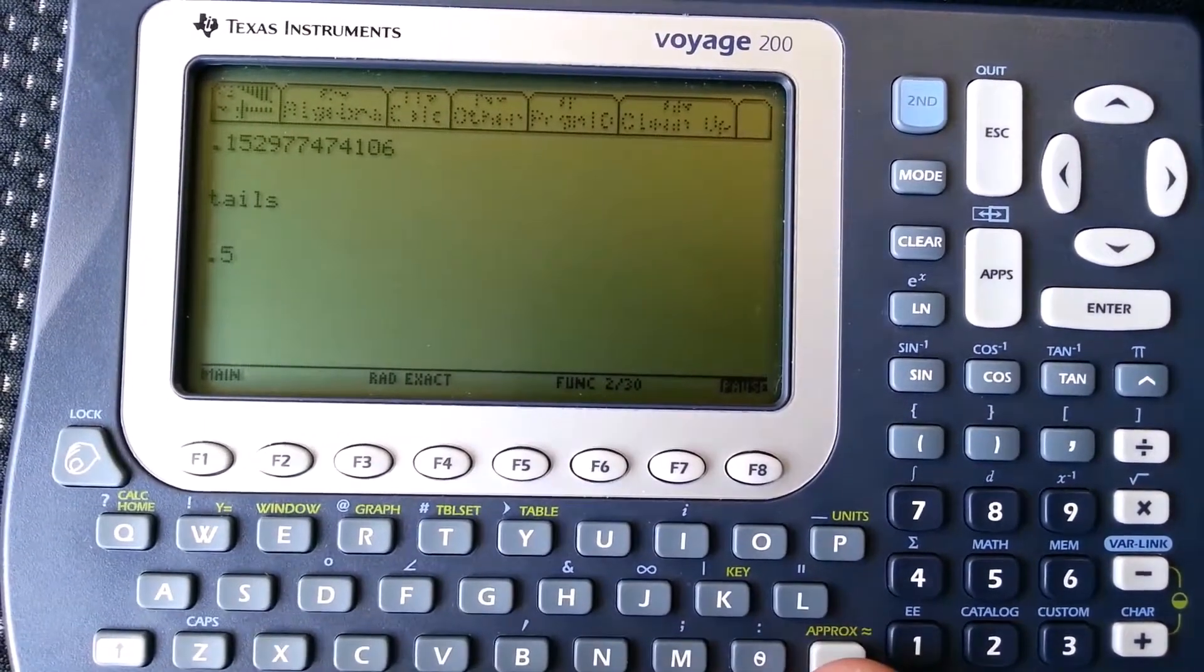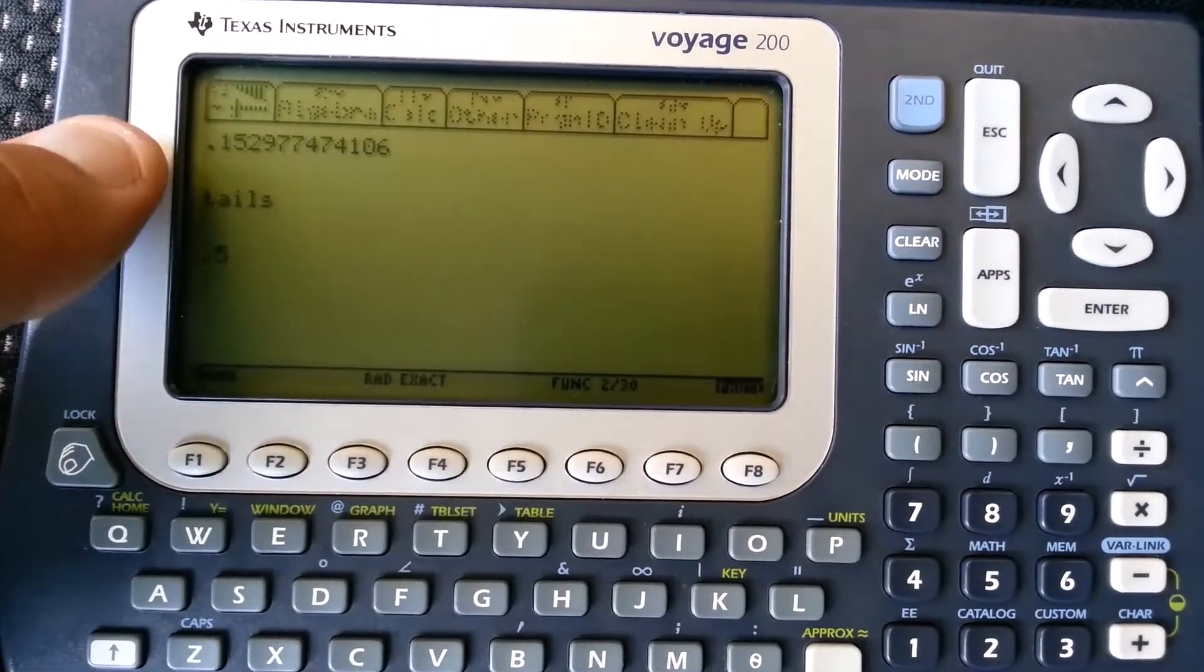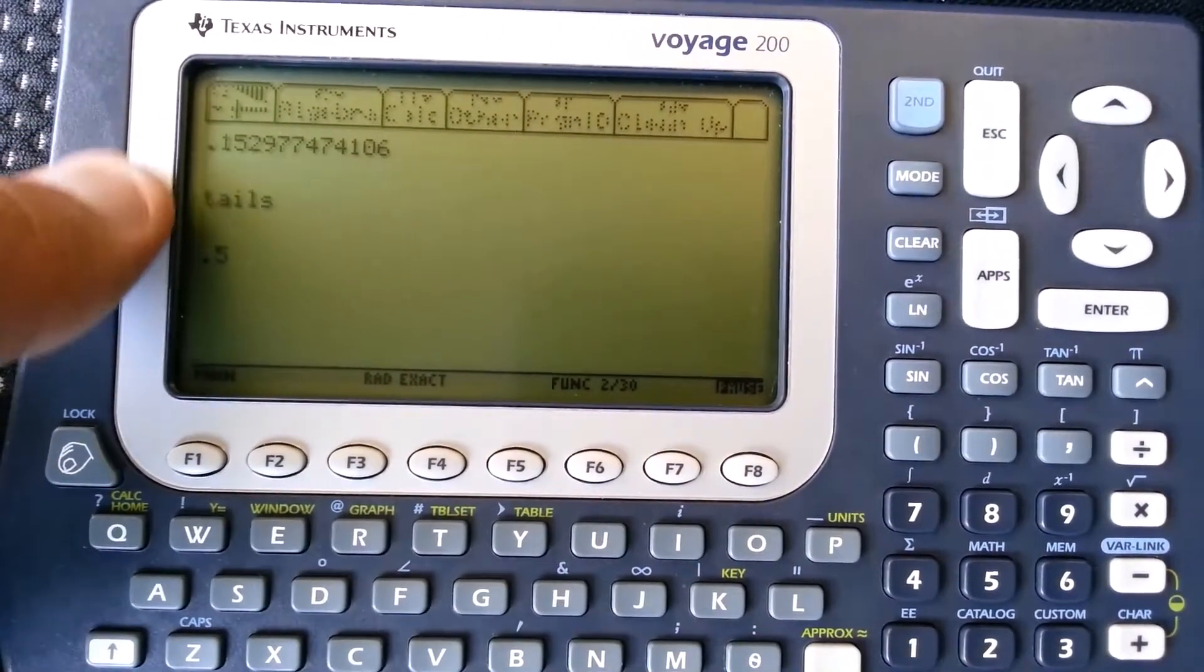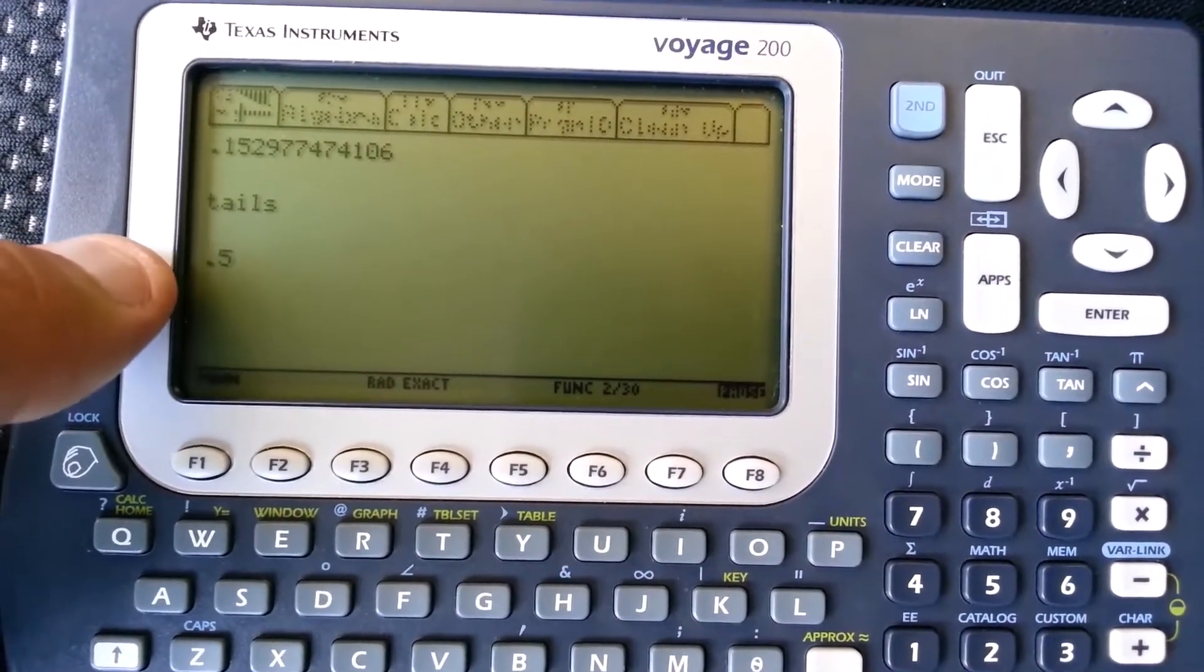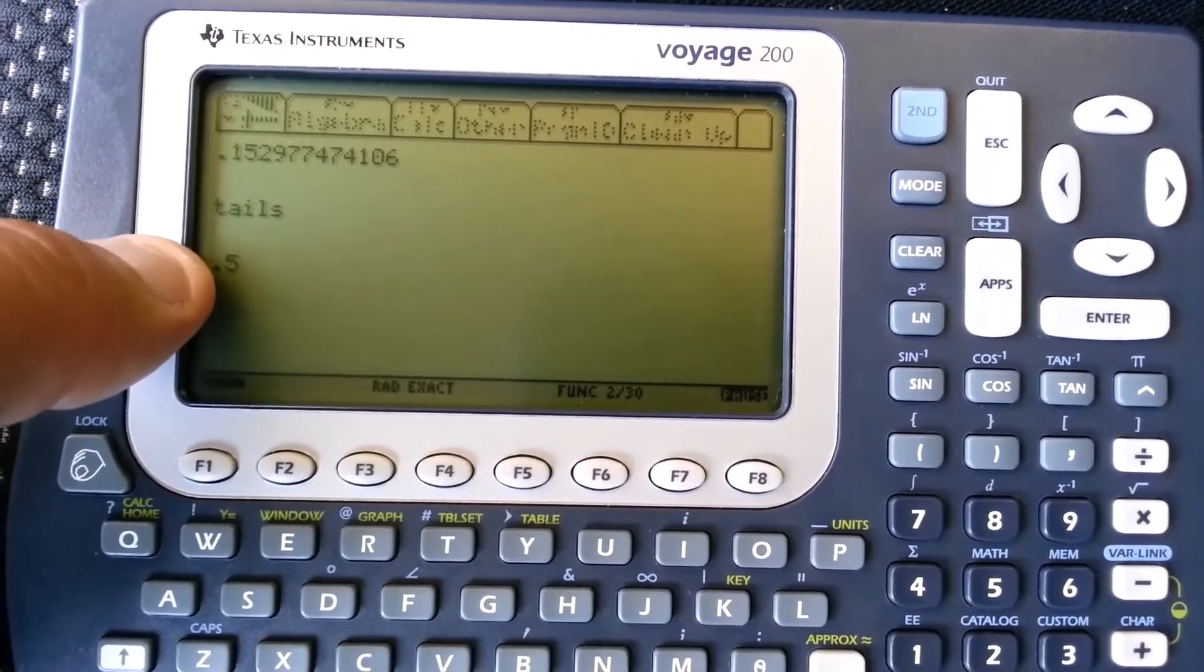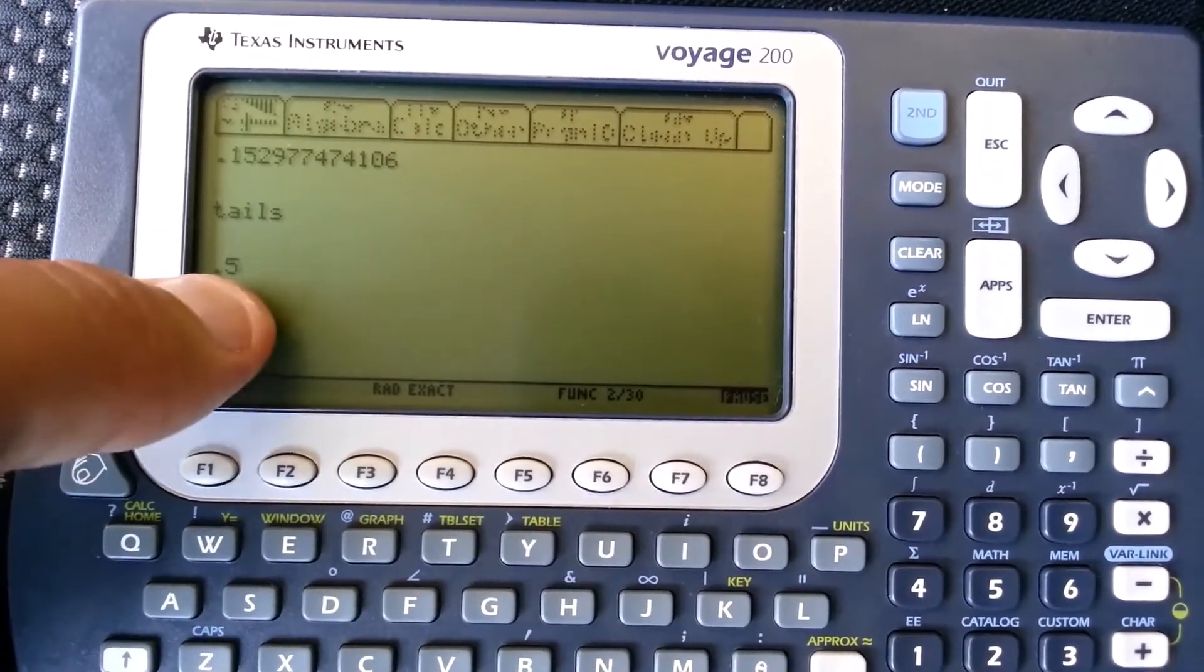And I flip again. The pseudo-random number is 0.1529. That's tails. I have in the vector, I have a 1 and now a 0, and the average of 1 and 0 is 0.5.